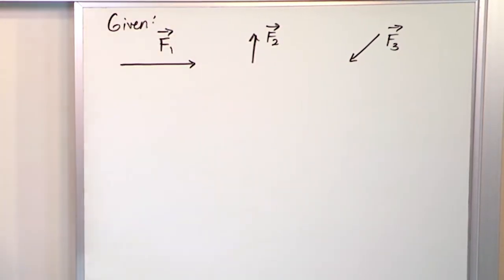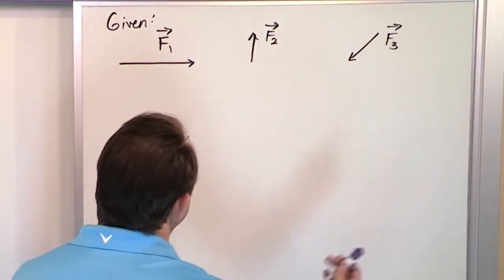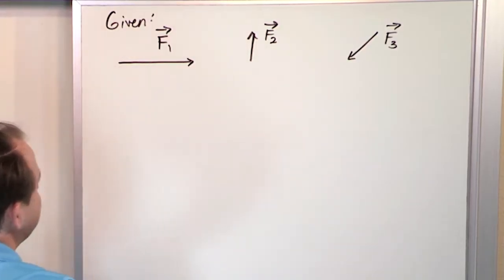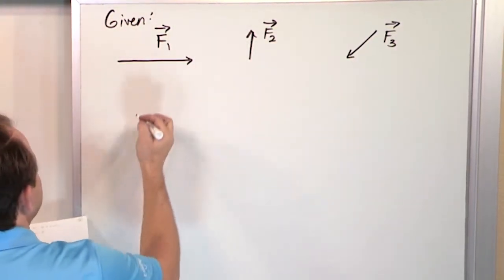Now you know how to add these vectors. We've done that before. So we're not just going to add them because that's easy. You just do tail to head and then you connect them. We've done that many, many times. How would you do the following?